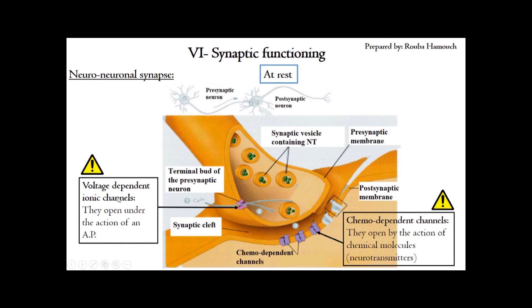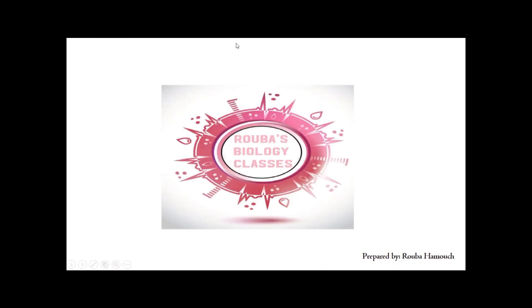In the exam you will also be asked to define chemo-dependent ionic channels. Chemo-dependent ionic channels are found on the post-synaptic membrane, coupled to neurotransmitter receptors, and they open by the action of neurotransmitters — which are chemical molecules. When the neurotransmitter binds to its receptor, this binding allows the opening of these ionic channels and the movement of ions across the membrane. They do not open if the neurotransmitter is not bound to its receptor. In the next video we will explain the steps of synaptic transmission in both excitatory and inhibitory synapses.